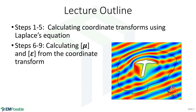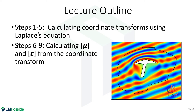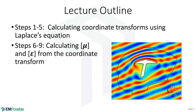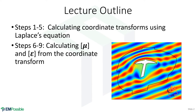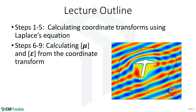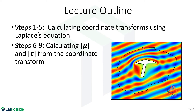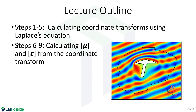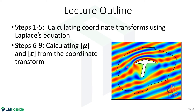Steps one through five are going to calculate the coordinate transform using Laplace's equation. Remember, transformation optics starts with a coordinate transform. It then applies that to Maxwell's equations and moves the math over to the permeability and permittivity. So the first whole half of this is calculating the coordinate transform. Since we don't have equations, this is done numerically by solving Laplace's equation within the cloak region.